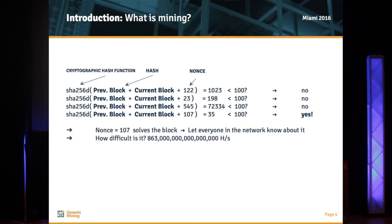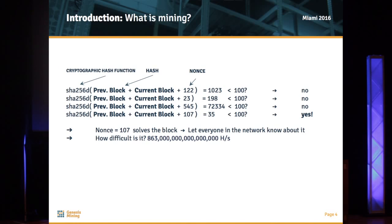Miners are authorizing and validating Bitcoin transactions. Without too many technical details, you basically take the previous block, the current block, and then you have a nonce value that you are tweaking, and you apply a cryptographic hash function on top of this input. The output of the hash function is random, so you have to try, see the output, and check it. If the output is lower than a certain parameter, you found the block. For example, with nonce 122 you get 1023 — not lower than 100, so you didn't find the block.